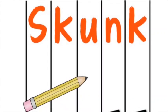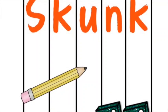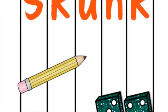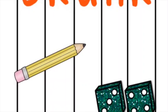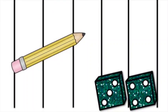Skunk requires four items for play. Each student and the teacher needs a recording sheet and pencil. The teacher also needs two six-sided dice.